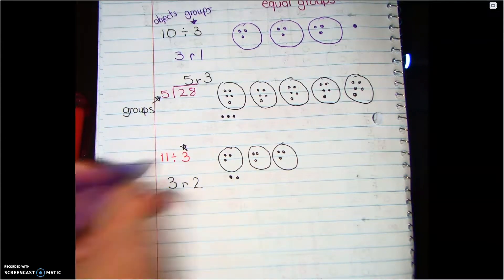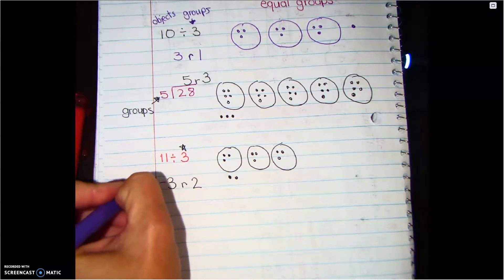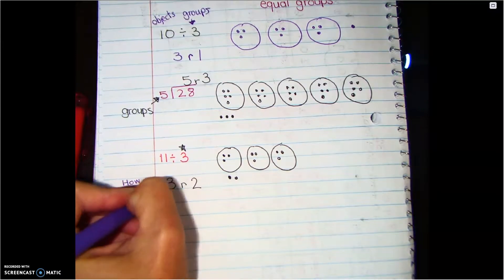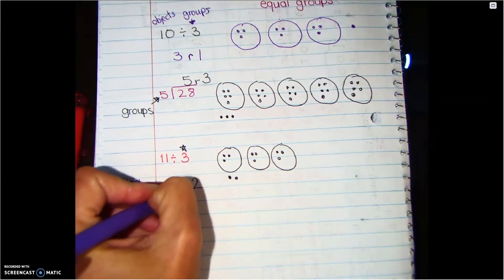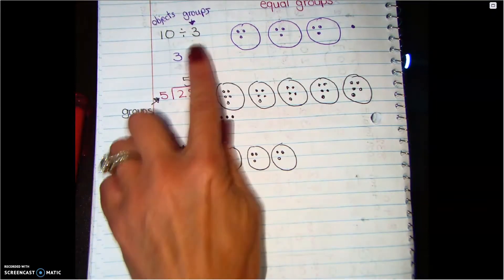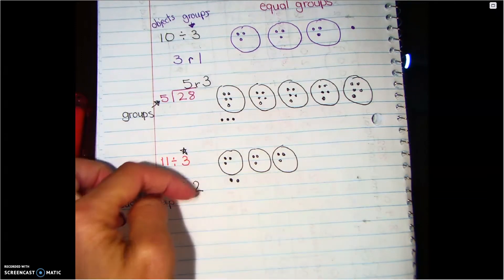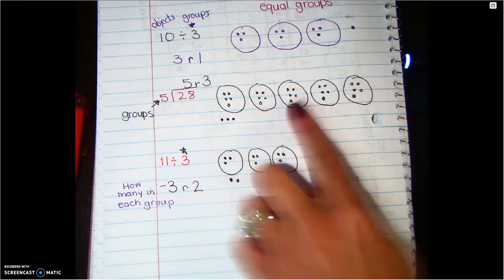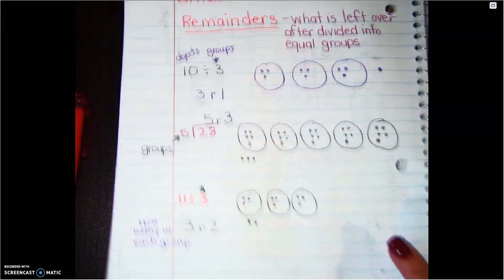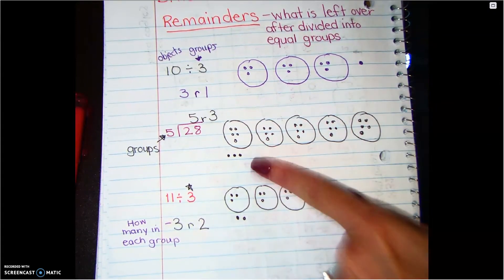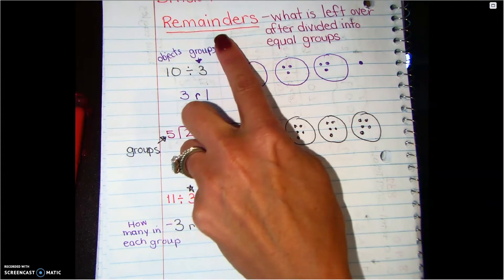Okay, so today we're going to be practicing really getting an understanding of what that remainder is, what's left over if it can't be in there equally. Because remember, when we're putting them into groups, they have to be equal groups. So whatever can't fit in is what's left over, and that is called our remainder.